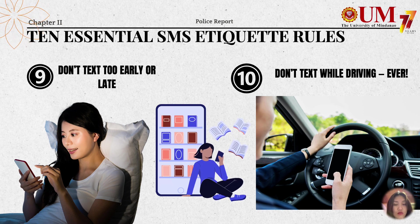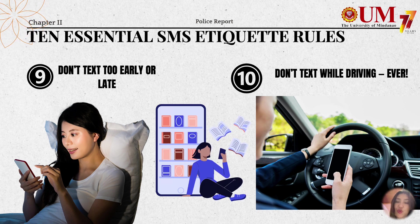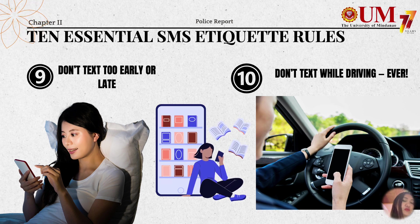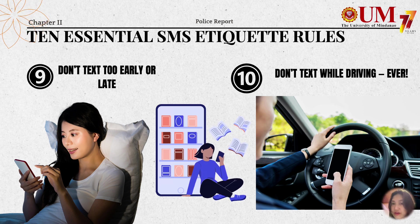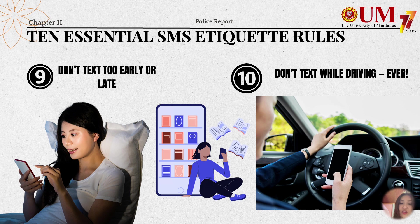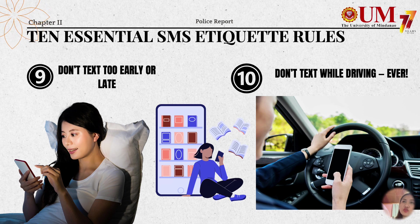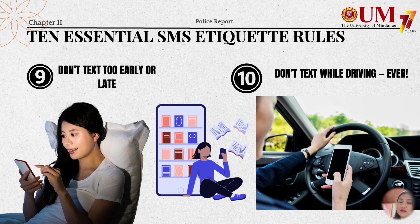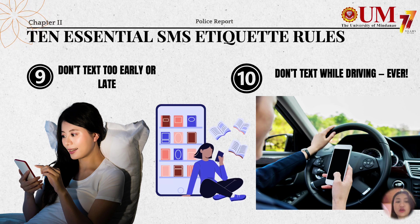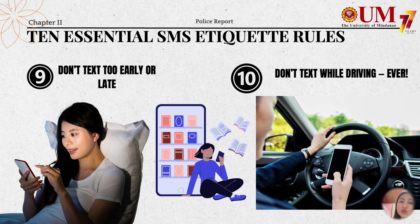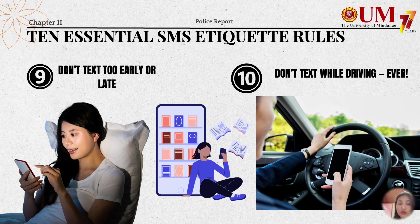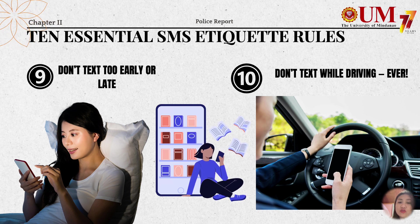The ninth SMS rule is don't text too early or too late. Take into consideration that some people use their cell phone as an alarm clock or have notification tones for received texts. The general guideline is 7 a.m. to 9 p.m. If you know the person stays awake after 9 p.m., you may text them, but following this rule shows you respect their sleep and personal time.